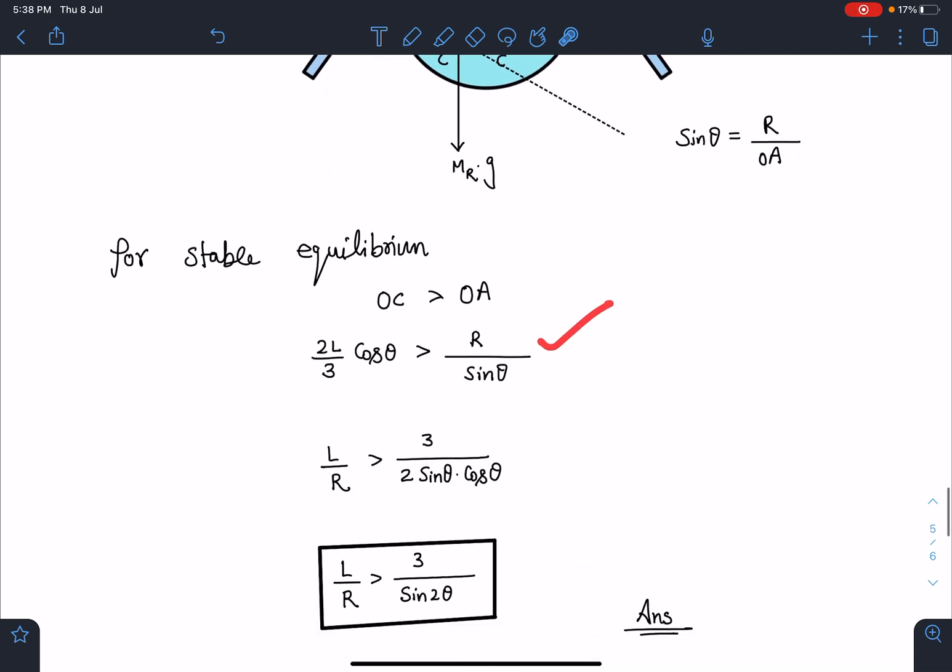Now I can just rearrange this term because we have to comment on L by R ratio. So L by R should be greater than 3 by 2 sin theta cos theta. And 2 sin theta cos theta I can write as sin 2 theta. So this L by R ratio for this particular case will become, it should be greater than 3 by sin 2 theta. I hope you are able to understand this part.